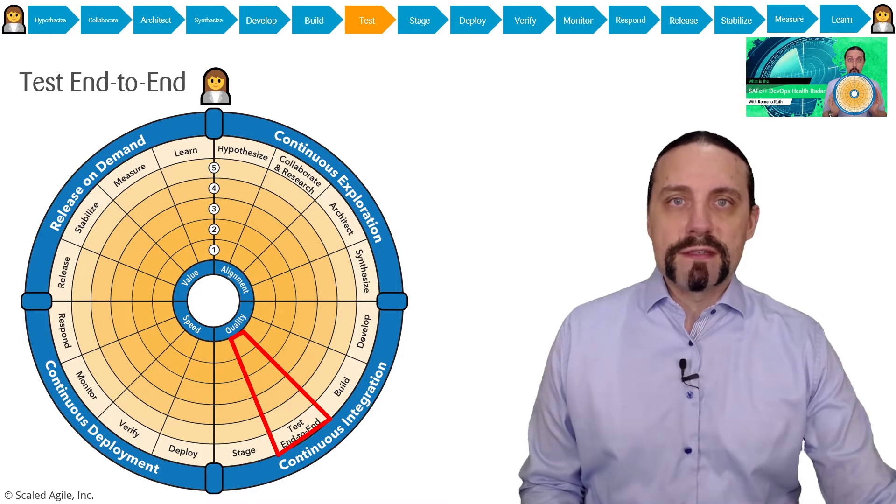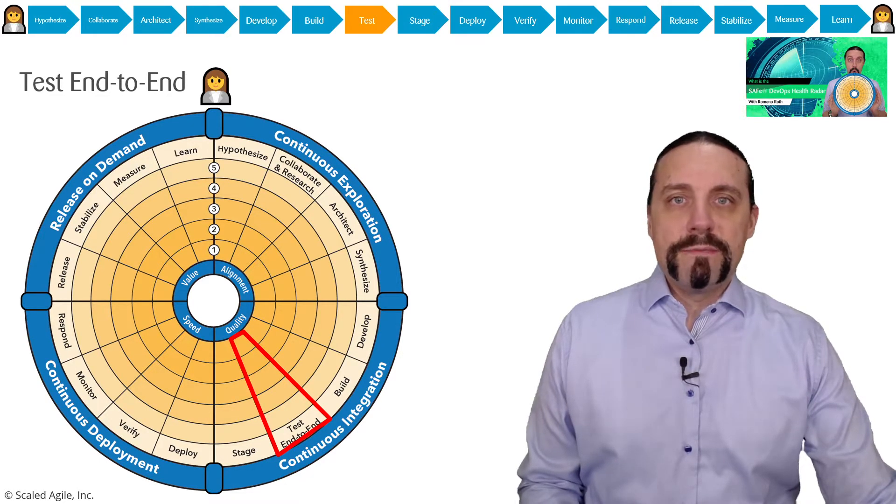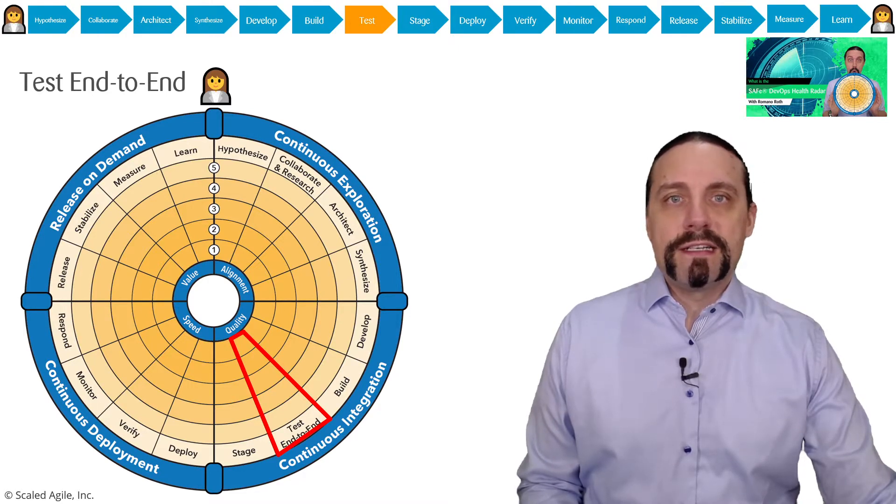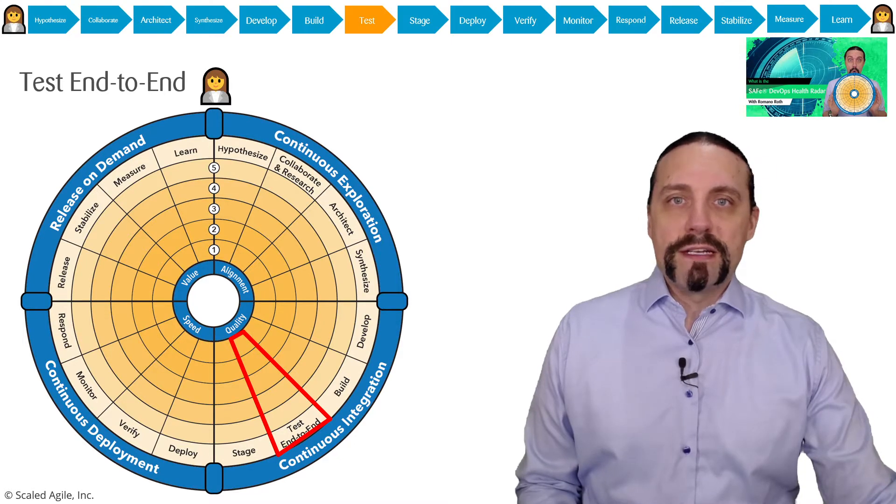We do interviews with the customer and market research. Then we go into architect, defining the minimal architecture to prove the hypothesis. After that we go into synthesize where we break down this epic into features and create a roadmap and vision.